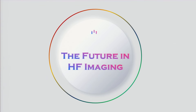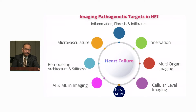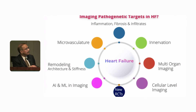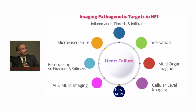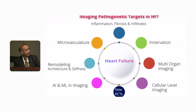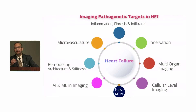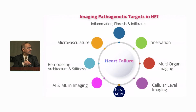Now we'll go to some esoteric stuff — the future in imaging. These are the targets that have had significant studies: remodeling, architecture, stiffness, studying the microvasculature, inflammation, fibrosis, and infiltration. There was a lot of enthusiasm in innervation imaging a few years ago because it correlated with arrhythmic death, but it's kind of plateaued off. Multi-organ imaging is coming up — that's something you'll keep hearing. There is cellular level imaging with significant advances in identifying cellular metabolism. And there are new ways of incorporating AI, ML, and RCTs as well as imaging.